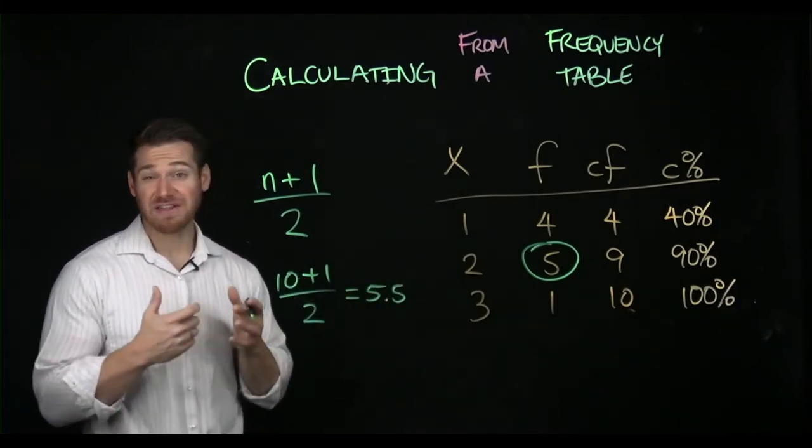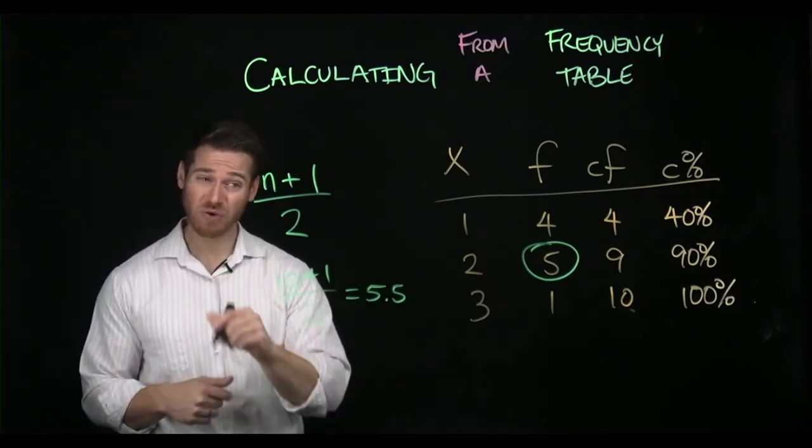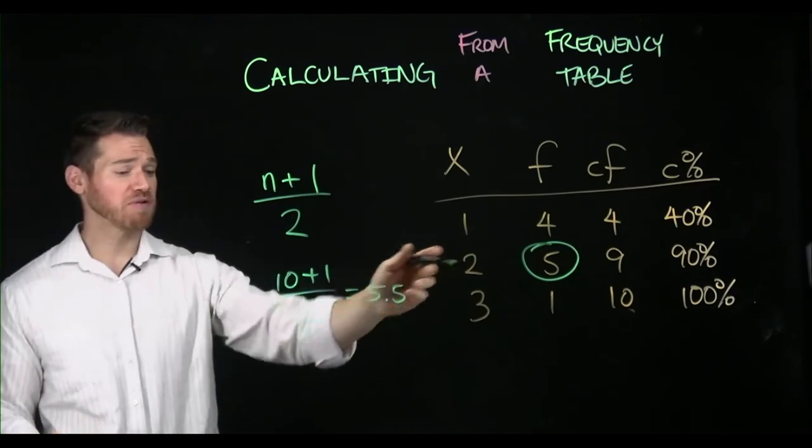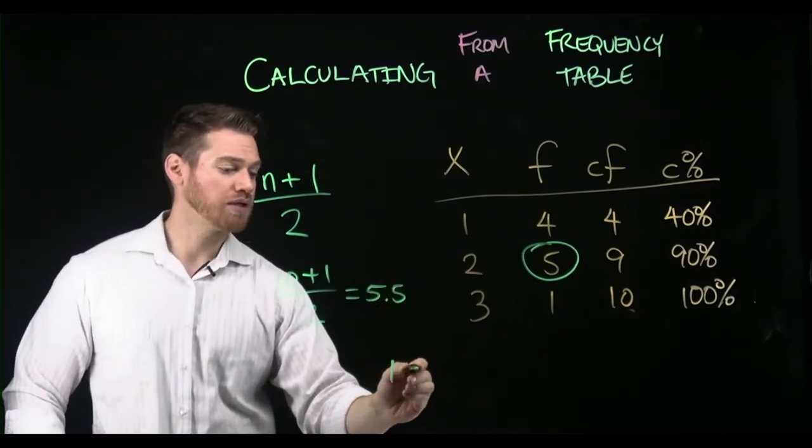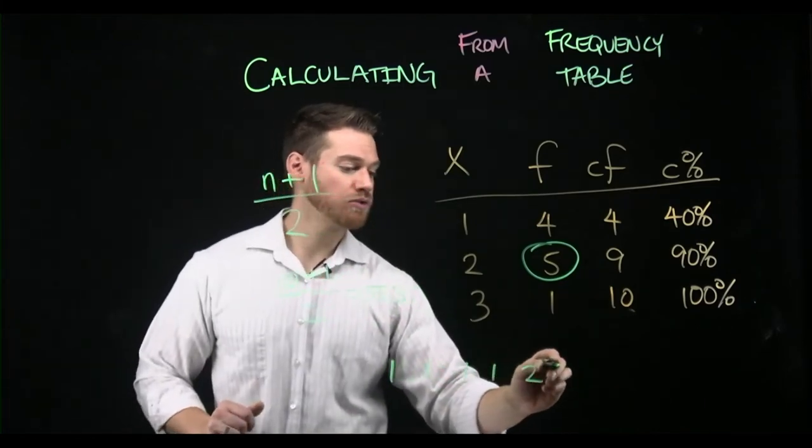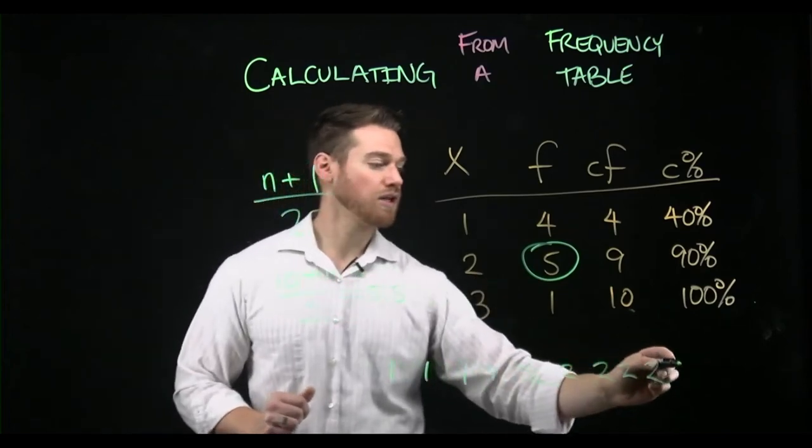So we can't find the 5.5 score. So what we would do is find the fifth score and the sixth score as we count through the list. Because remember, if we listed all these out, what this would look like is one, one, one, one, four ones, two, two, two, two, two, five twos, three.